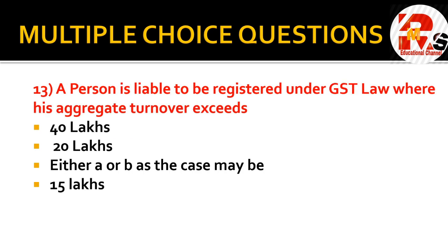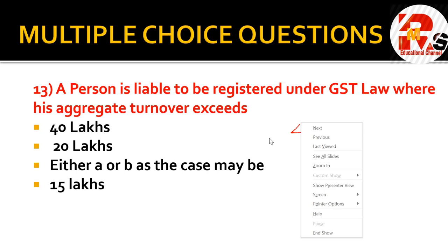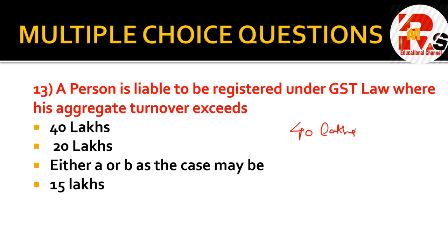Question thirteen: a person is liable to be registered under GST law where his aggregate turnover exceeds — these rules keep changing. There are two limits: 40 lakhs for goods and 20 lakhs for services. Since the question does not clearly specify goods or services, and both 40 lakhs and 20 lakhs appear in the options, the right answer is either A or B as the case may be.